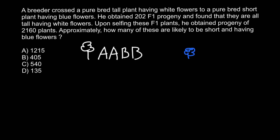And the genotype of the second plant would be small a small a and small b small b — meaning for gene A both alleles are recessive, and for gene B the blue color allele is also recessive.